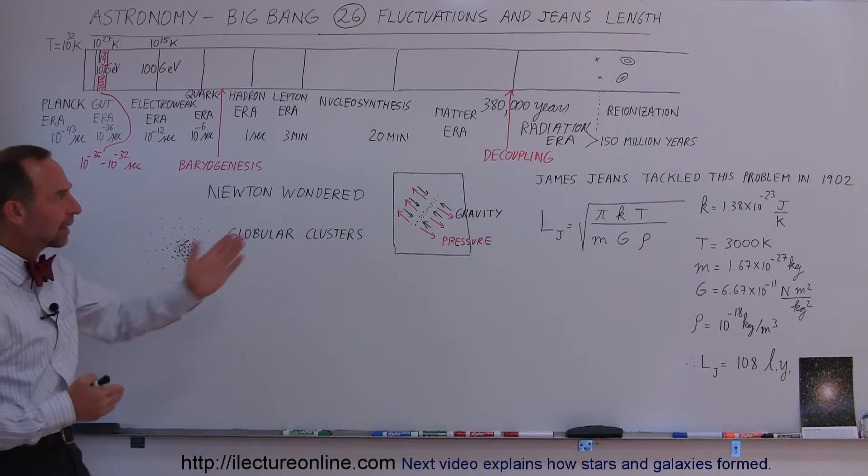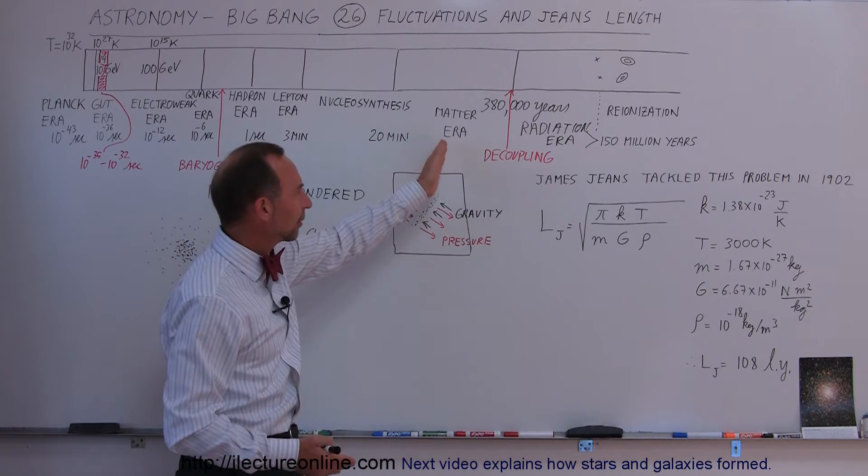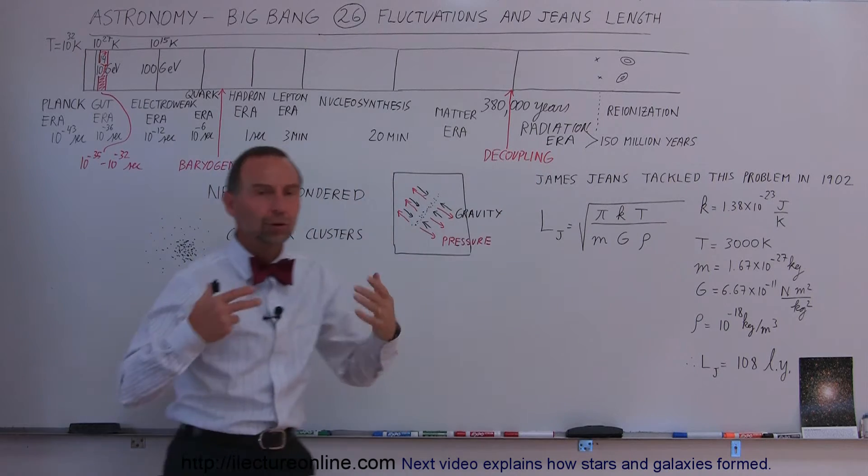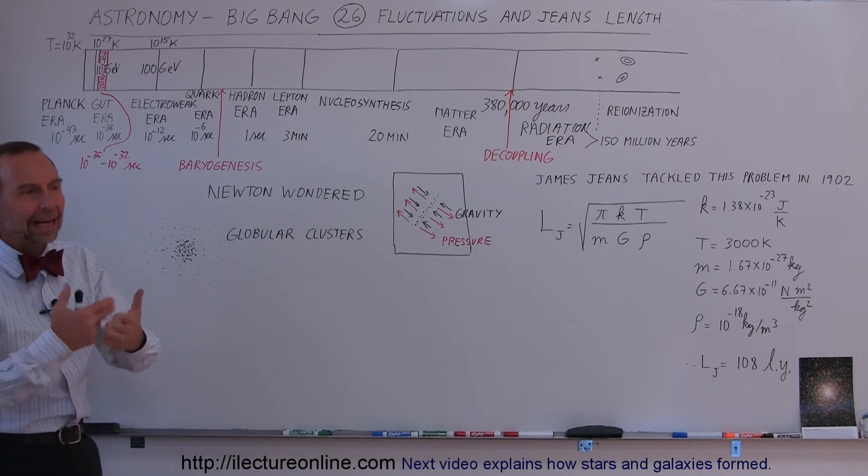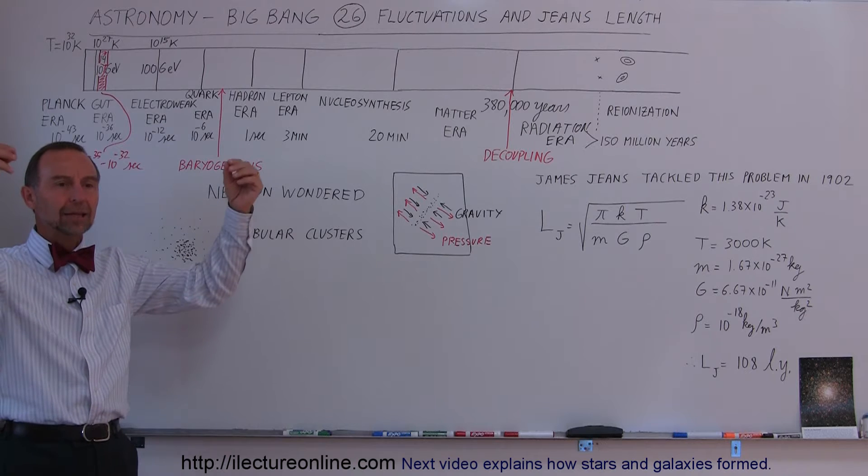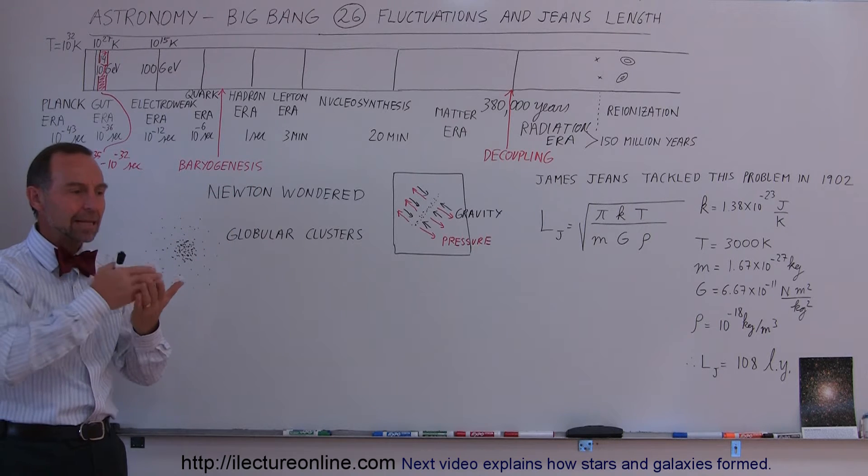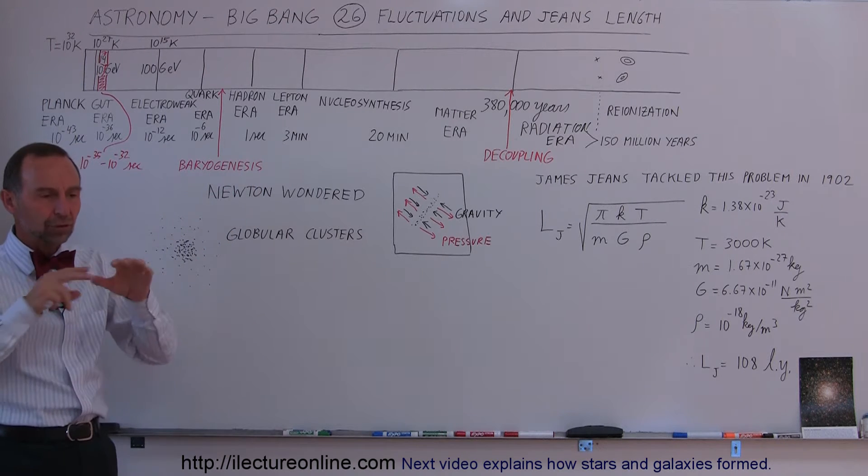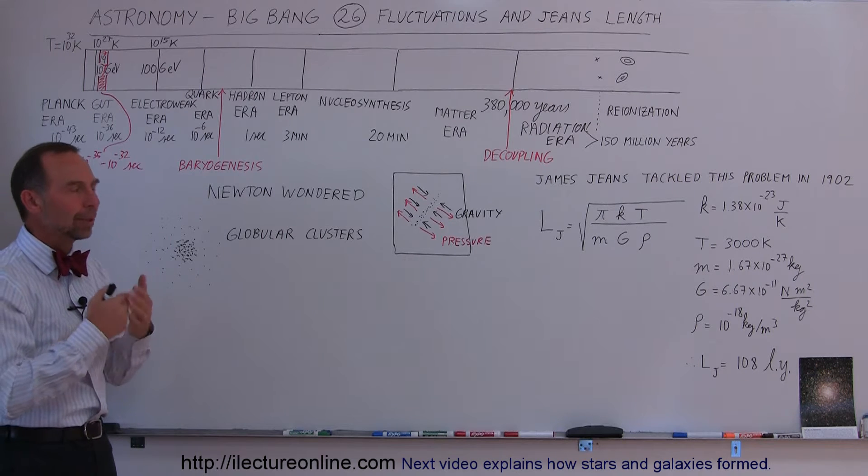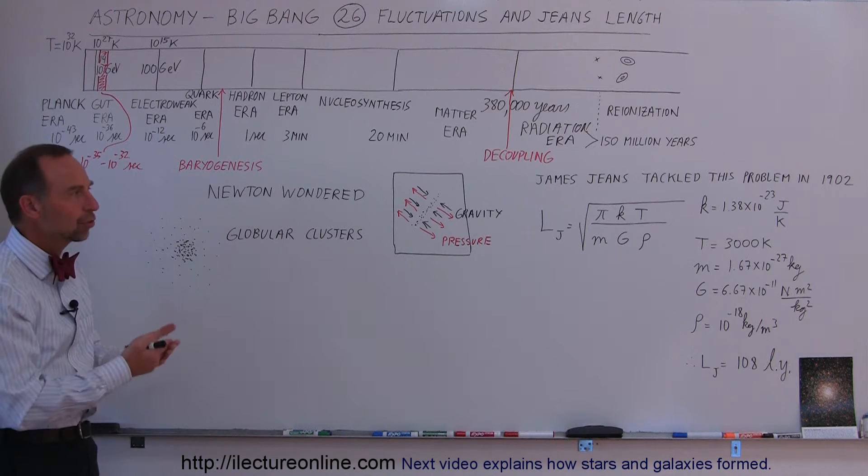Remember what the universe was like after decoupling. We went from the matter era to the radiation era where the universe was filled with hydrogen and helium. The electrons began to couple with the protons and the alpha particles to form atoms. So we had molecular or atomic hydrogen and helium.